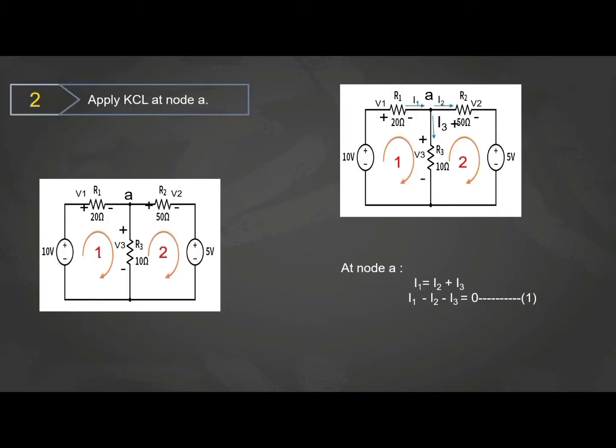After we get the direction for each loop, we can apply KCL at node A. The equation at node A is I1 equals to I2 plus I3. Rearrange back the equation, we get I1 minus I2 minus I3 equal to zero.